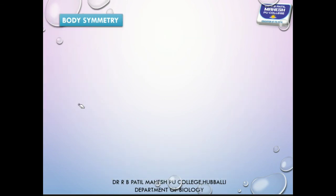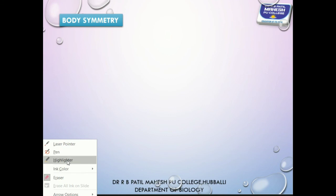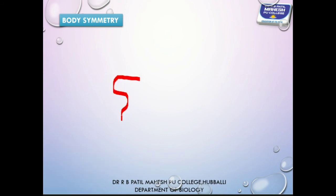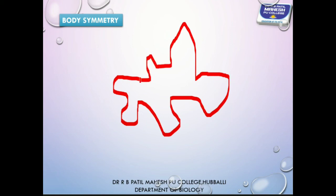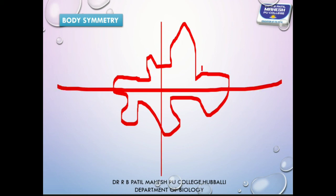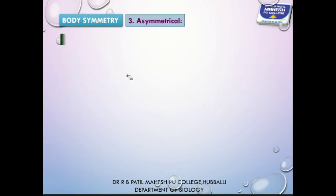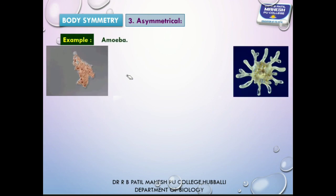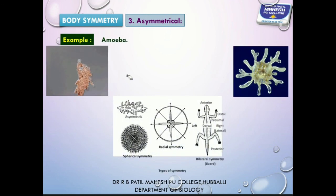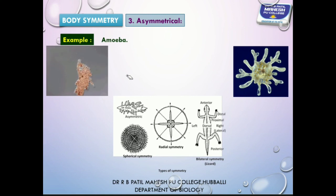Asymmetry — those animals that are irregular in shape, for example amoeba. When you cut amoeba along any axis passing through the center, two equal halves are not formed, and this type of symmetry is called asymmetry. So based on body symmetry, animals are classified into three groups: bilaterally symmetrical, radially symmetrical, and asymmetrical animals.